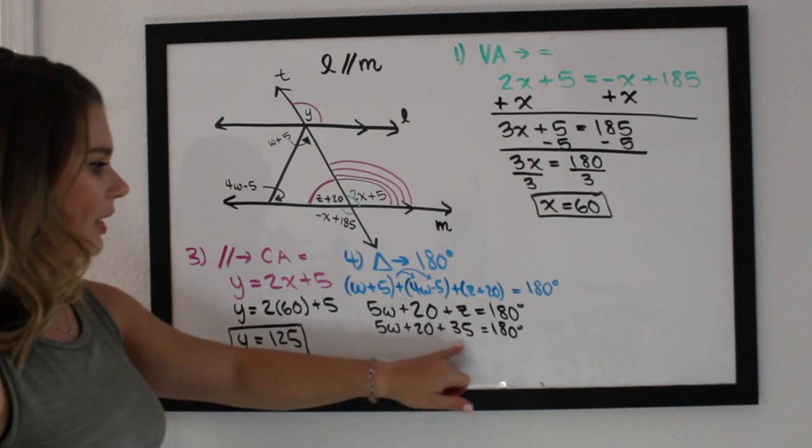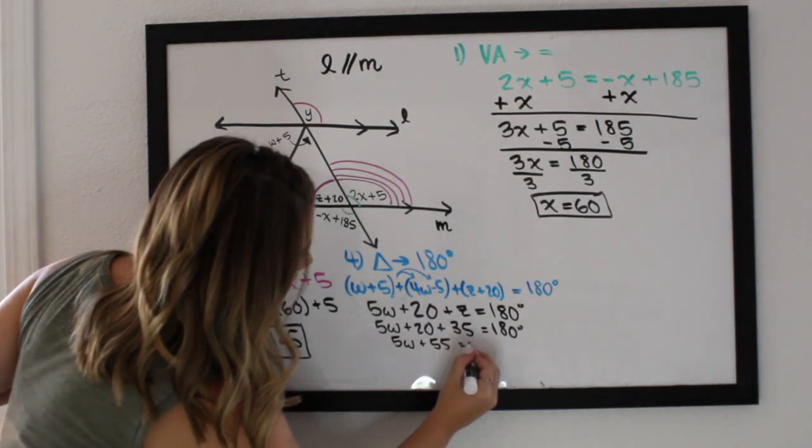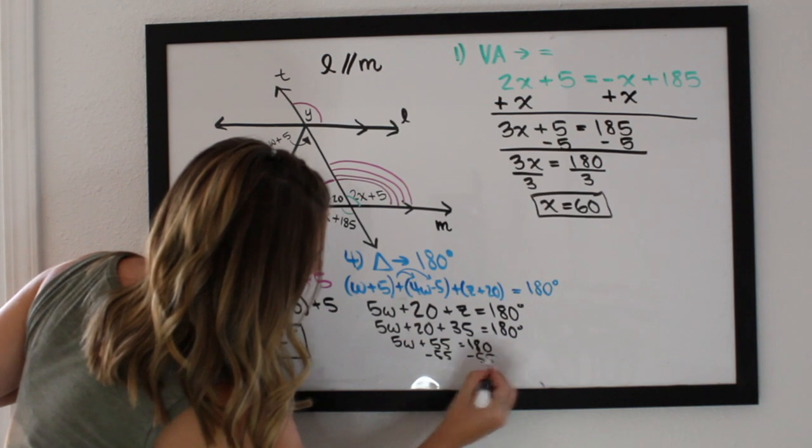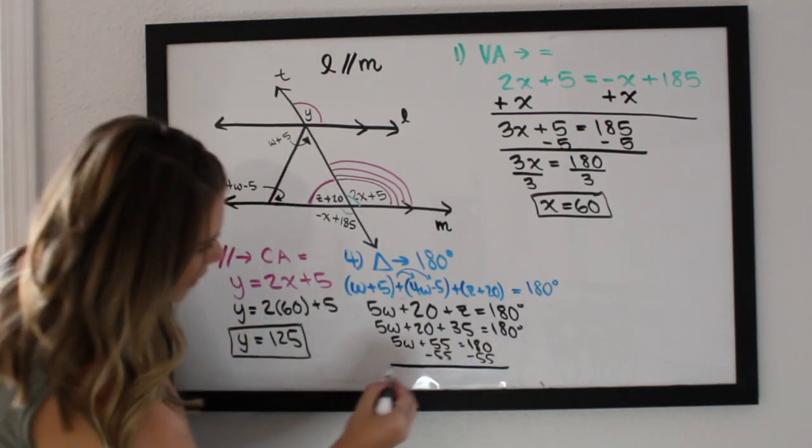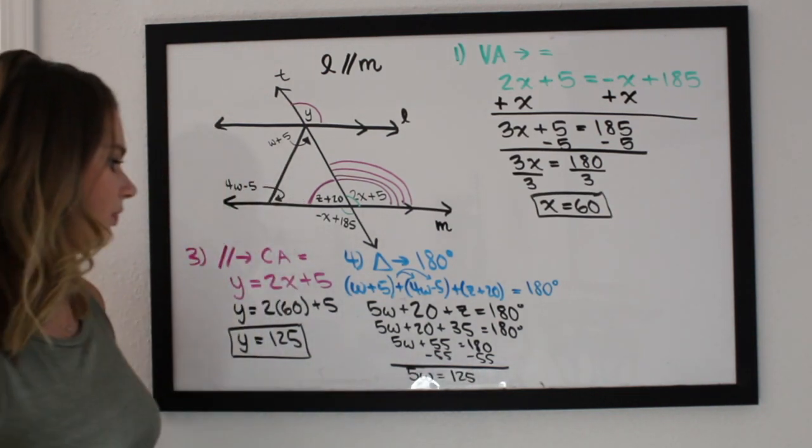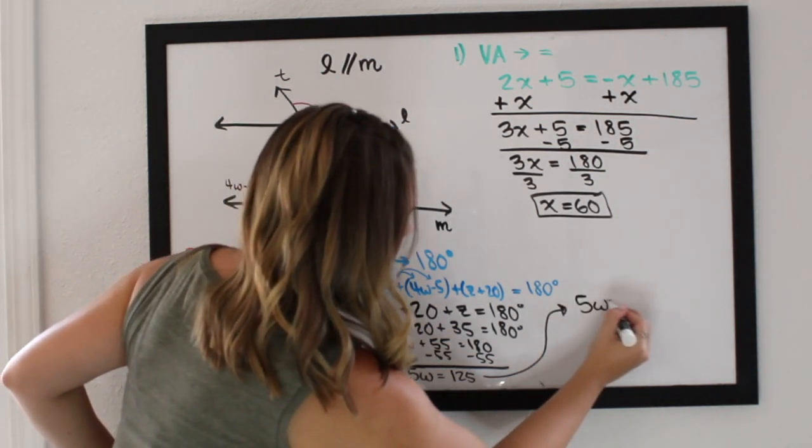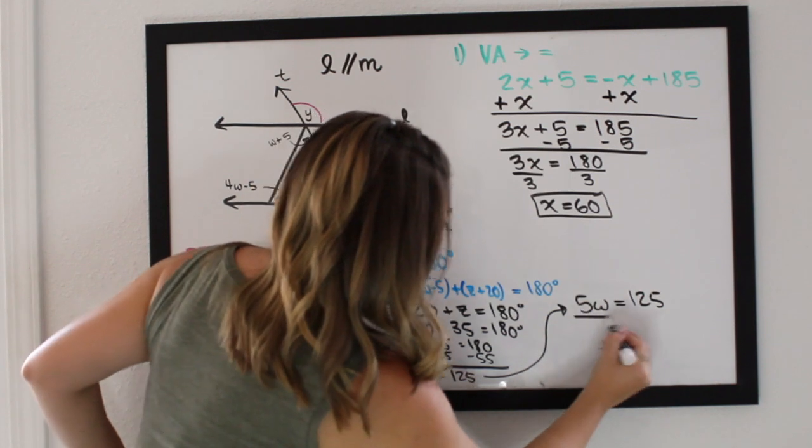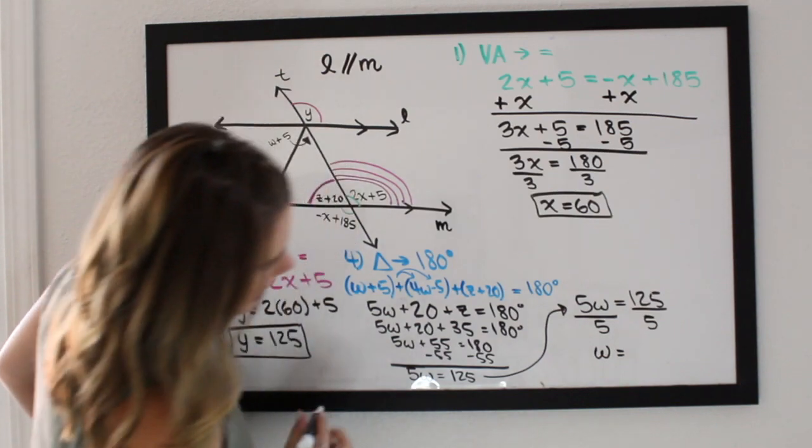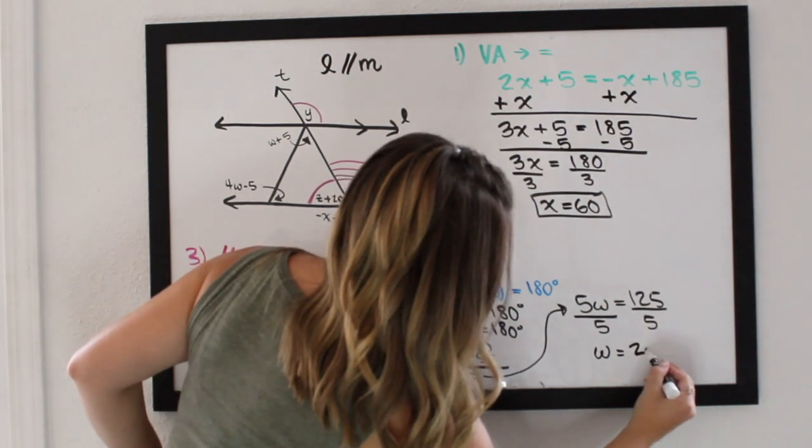So 20 plus 35 is 55. So I'll have 5w plus 55 is equal to 180. We're going to subtract 55 on both sides. So then I have 5w is equal to 125. I'm going to move this up here just so you can see that. So 5w equals 125. Divide both sides by 5. W equals, let's see, we have 5 times 20 is 100, 5 times 5 is 25, so we have 25.